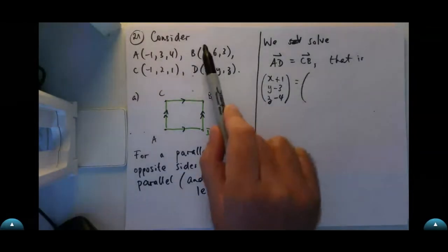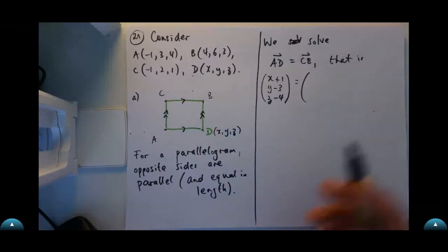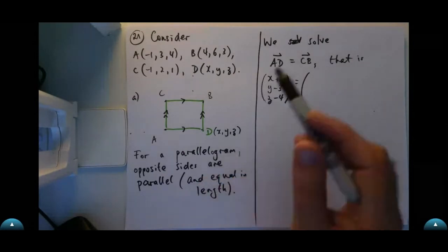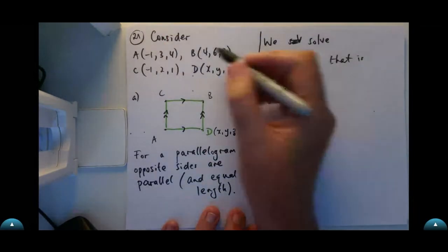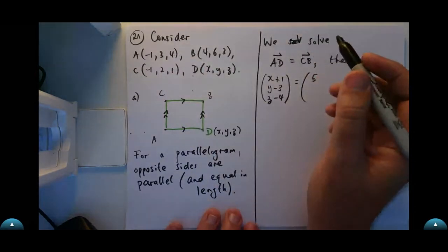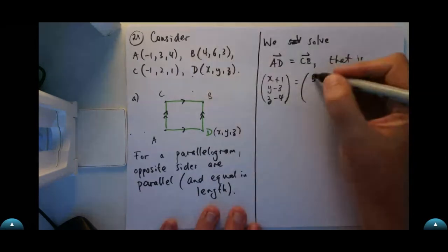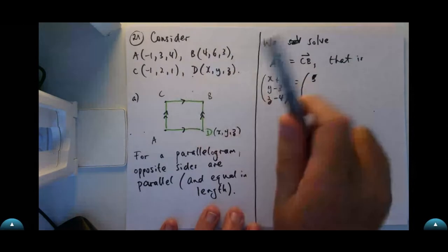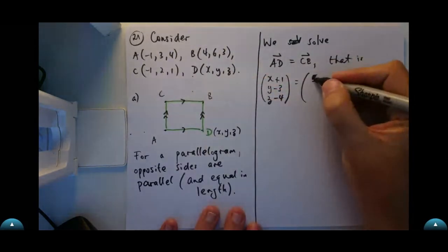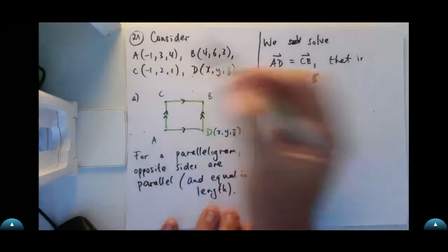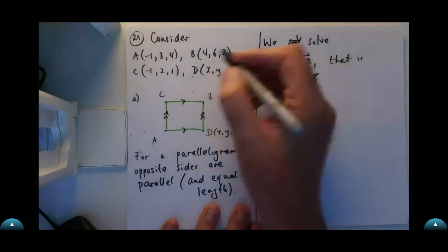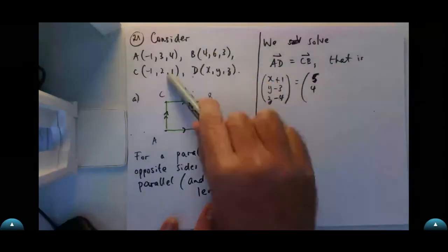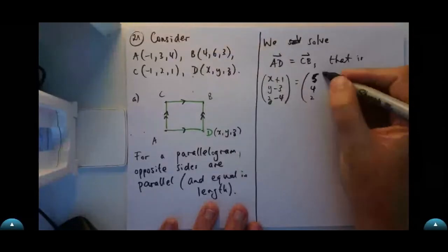Now we want CB — that minus that. Let me check: 4, 6, 3. So 4 minus negative 1 gives 5; 6 minus negative 2 gives 4; and 3 minus 1 gives 2. Now all we want to do is solve for X, Y, and Z.